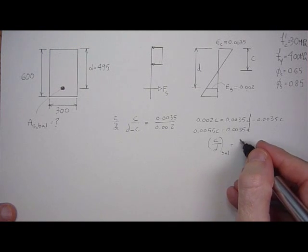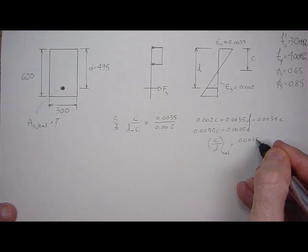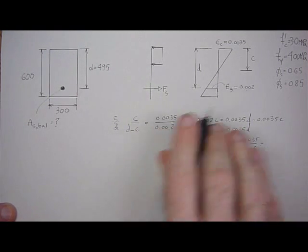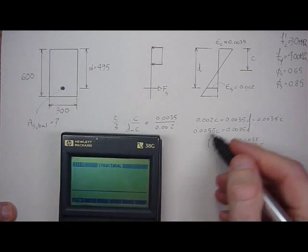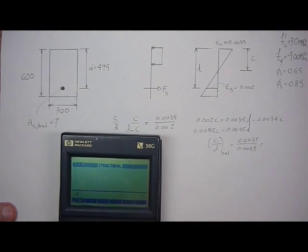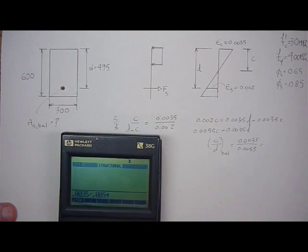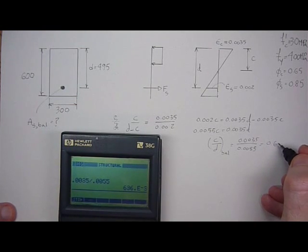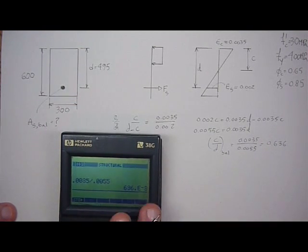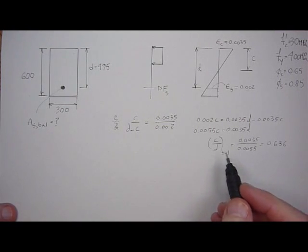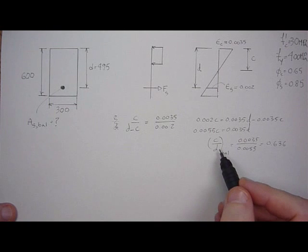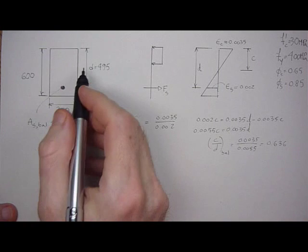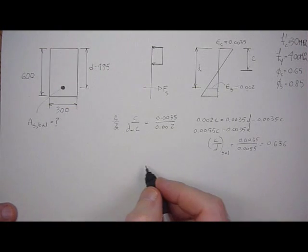is going to be 0.0035 over 0.0055. And that will never change for any section we deal with. So we don't have to re-derive this ever again. And that comes up to be 0.636. So now we have the location, the neutral axis for balanced conditions. We have the 495, the depth, so we can find out C balanced now.